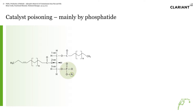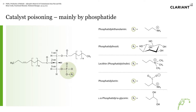The catalyst is mainly poisoned by the phosphatide compounds. These are some examples of phosphatides — I'm not going to go into detail on each one, but some of the most prevalent ones, like lecithin, you might be familiar with. These compounds contain phosphorus which can poison the catalyst and decrease its life.